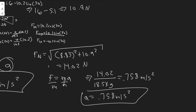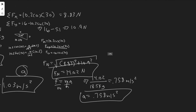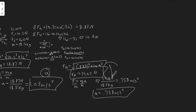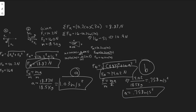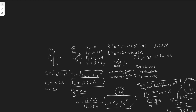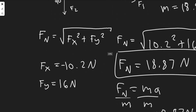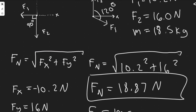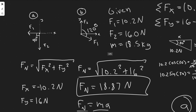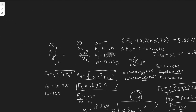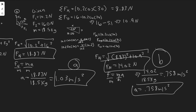So for part B, the net force is 14.02 newtons and the acceleration is 0.758 meters per second squared. The key takeaway is to sum the forces in x and y separately, then use the net force formula. Divide the net force by mass to get acceleration.